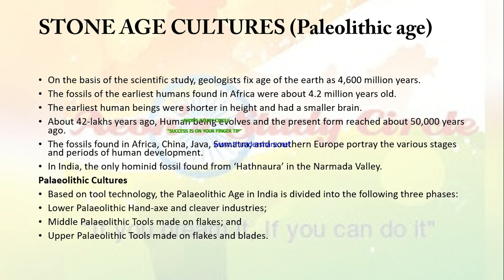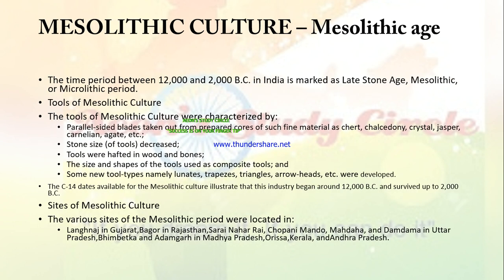In India, the only hominid fossil found is from Hathnora in the Narmada Valley. Based on tools and technology, the Paleolithic Age in India is divided into three phases: Lower Paleolithic Age, Middle Paleolithic Age, and Upper Paleolithic Age.